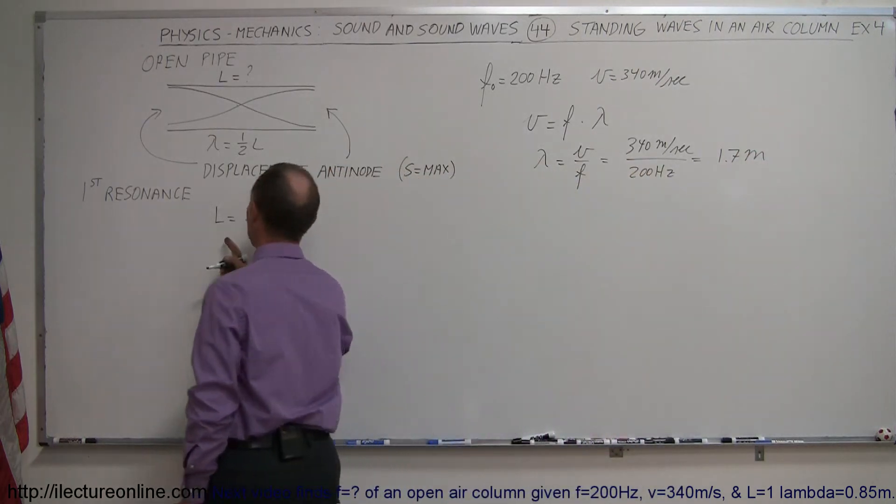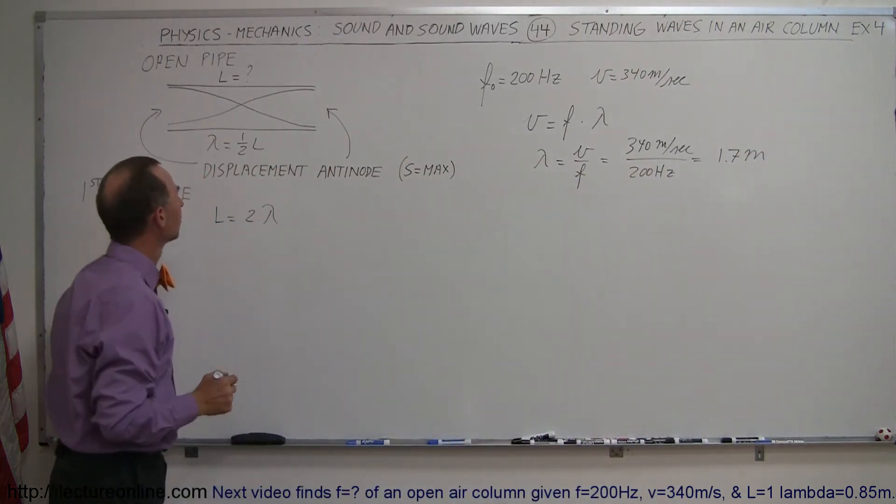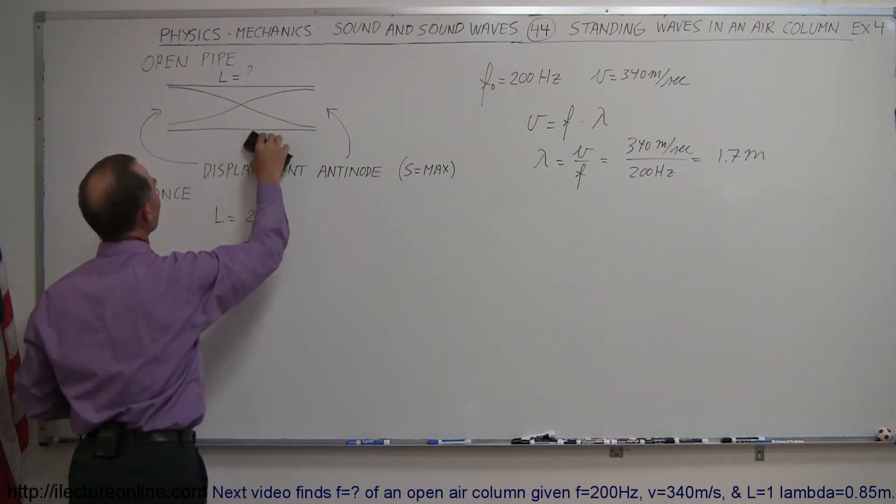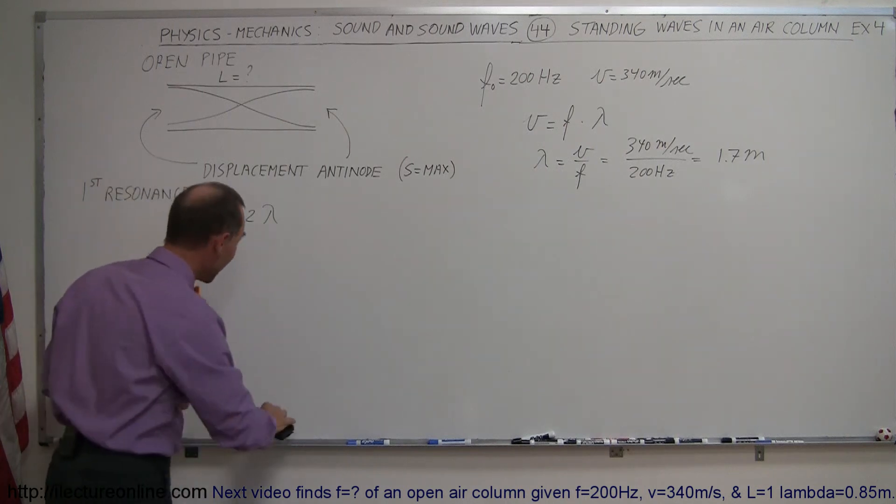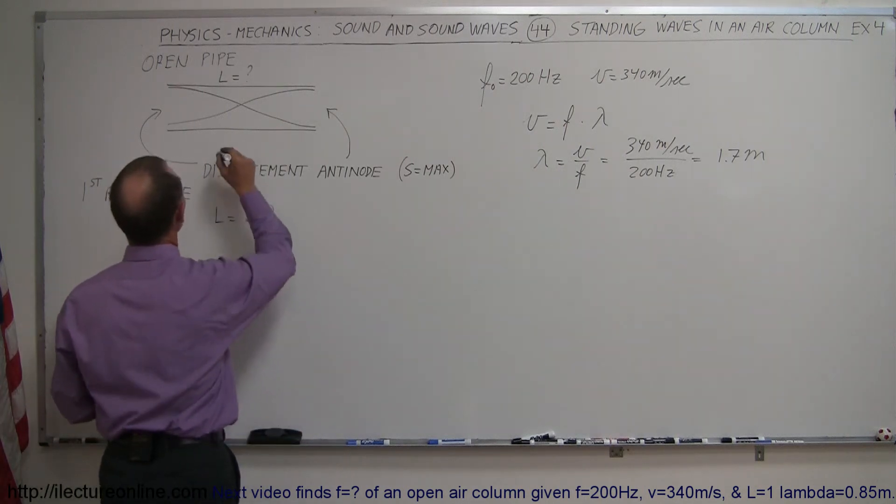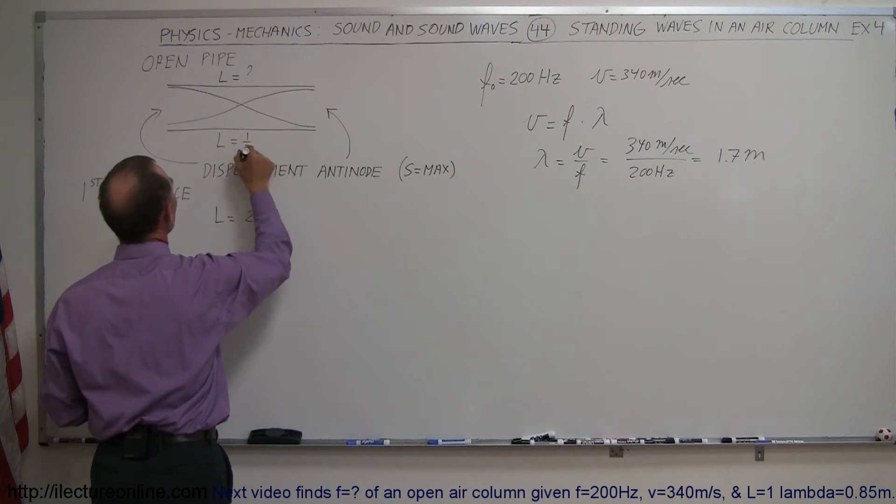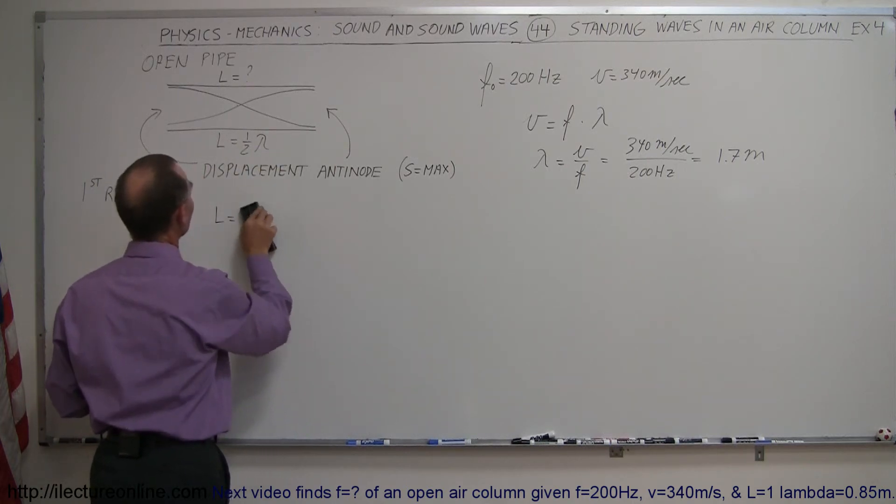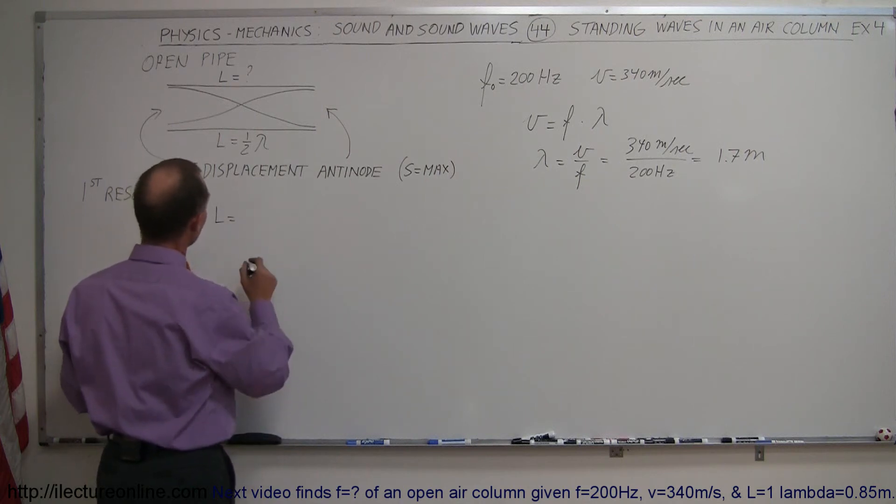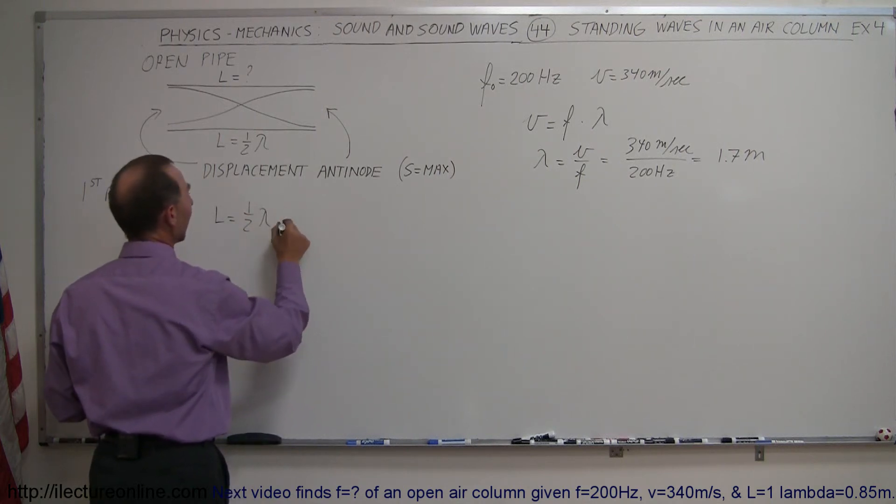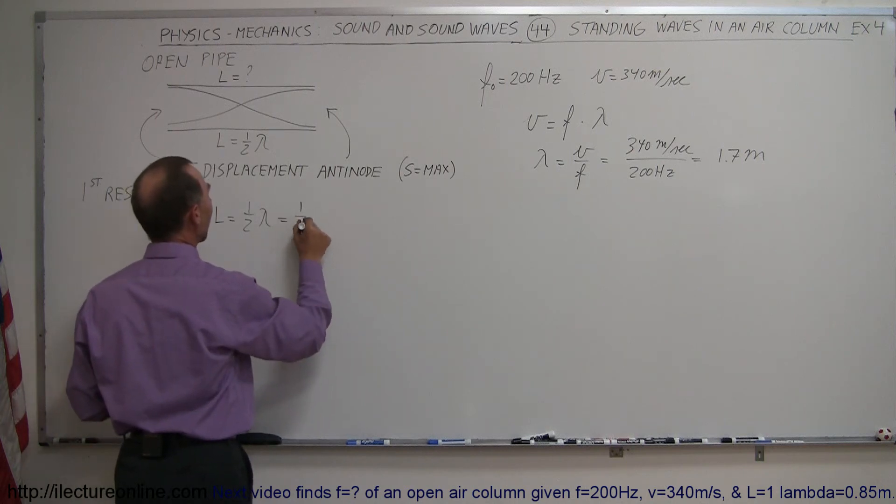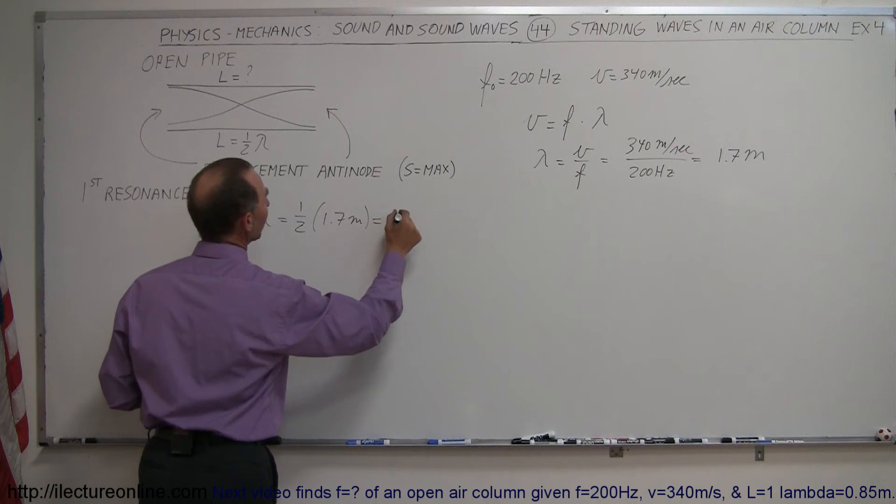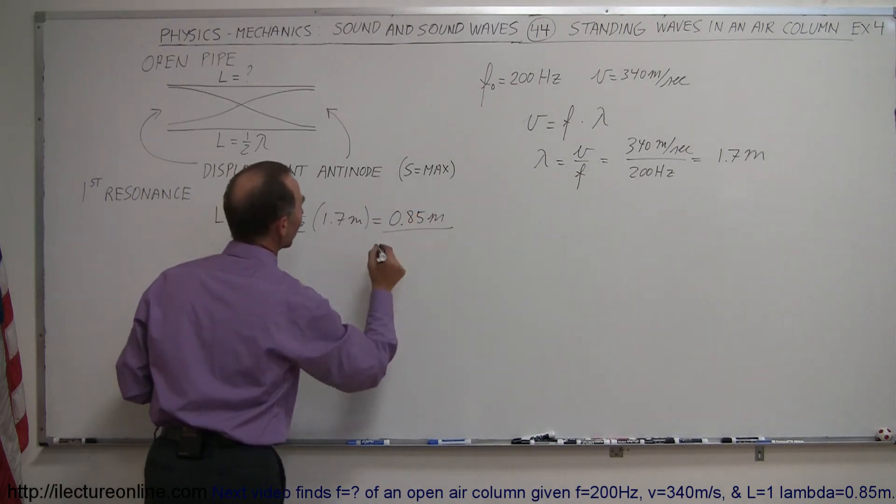Which means that the length of the pipe... ah, that's where I'm wrong. Something wasn't adding up, and I just figured out what it was. It's the length that's equal to half a wavelength. Therefore, the wavelength is equal to twice the length, or the length equals one-half lambda. And lambda equals 1.7 meters, so that's one-half times 1.7 meters, which equals 0.85 meters.